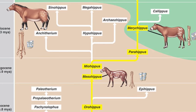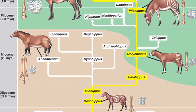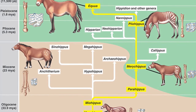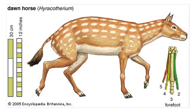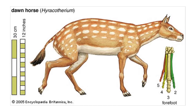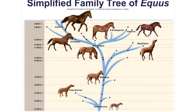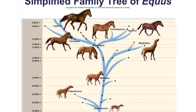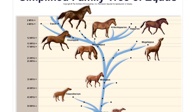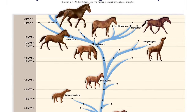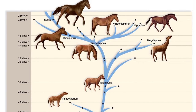Today, there is an embarrassment of riches showing every intermediate step in the horse's development from three and four-toed ungulate ancestors. We also have so many sister species that it is often difficult, if not impossible, to determine which clade is ancestral to which.